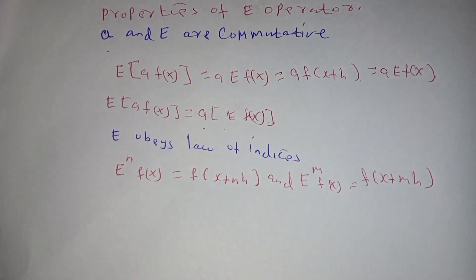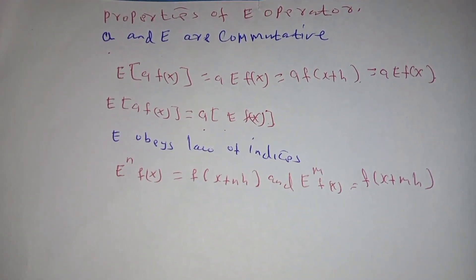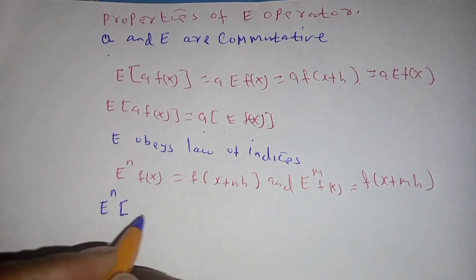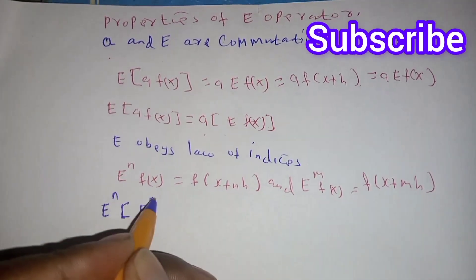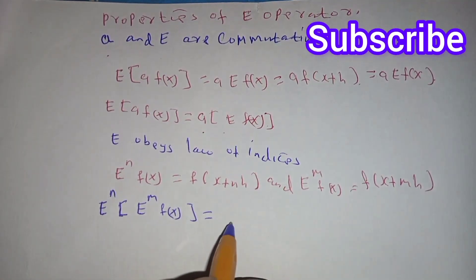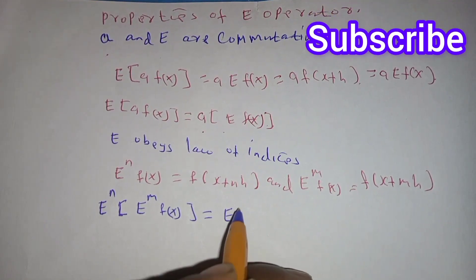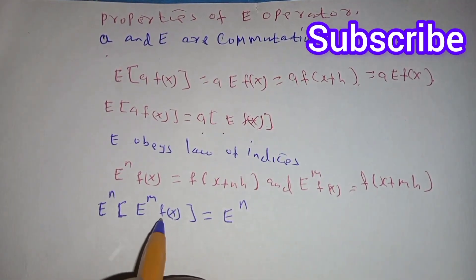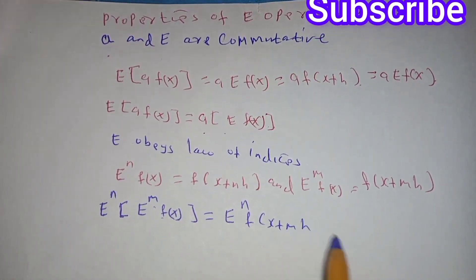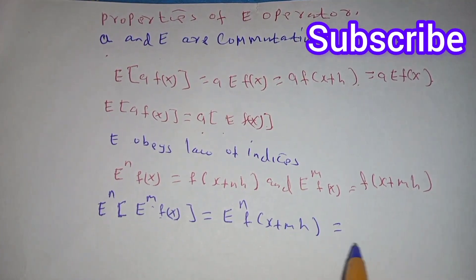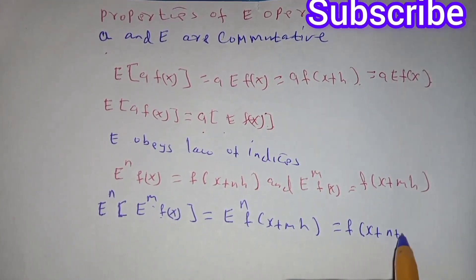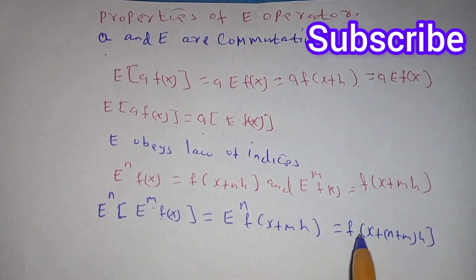Meaning that E power n of f of x is equal to E power n. Taking the shift operator of f of x plus m, we are going to have f of x plus mh, which is equal to f of x plus n plus mh.